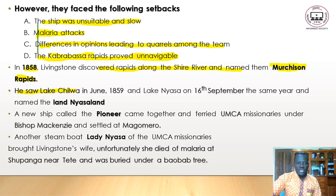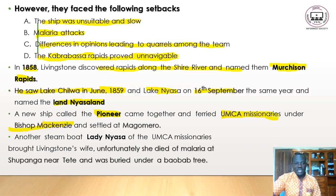He saw Lake Shirwa in June 1859, and on 16th September 1859 he saw Lake Nyasa. He named the land Nyasaland. A new ship called the Pioneer then arrived, together with the UMCA missionaries led by Bishop Mackenzie, and they settled at Magomero.